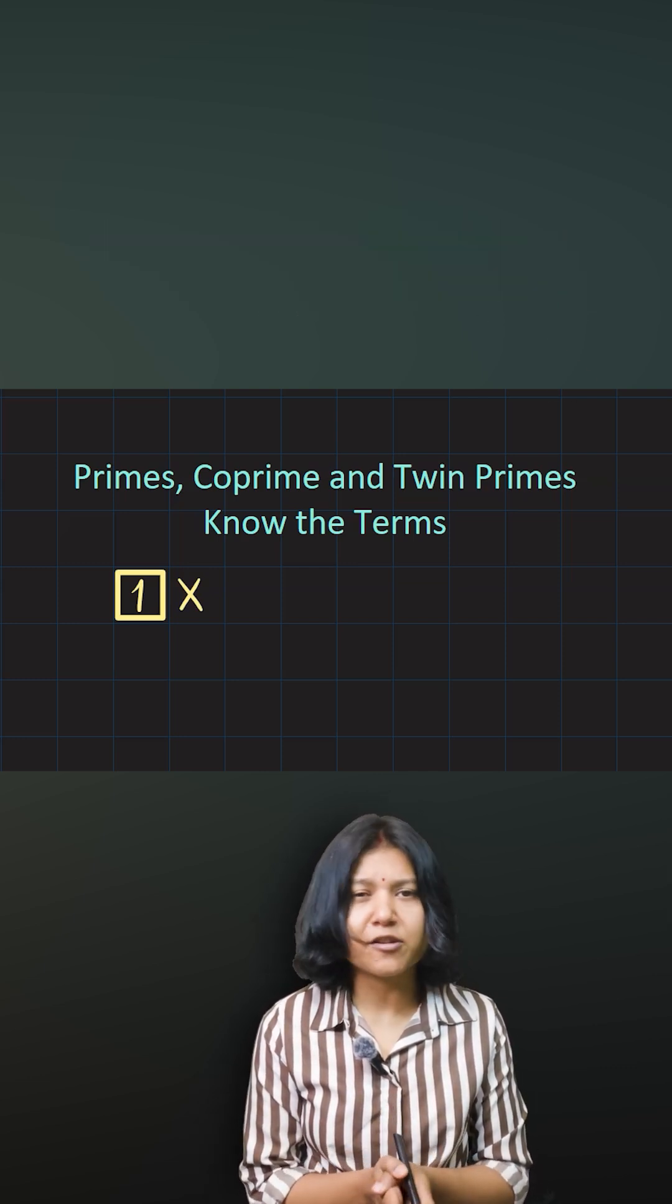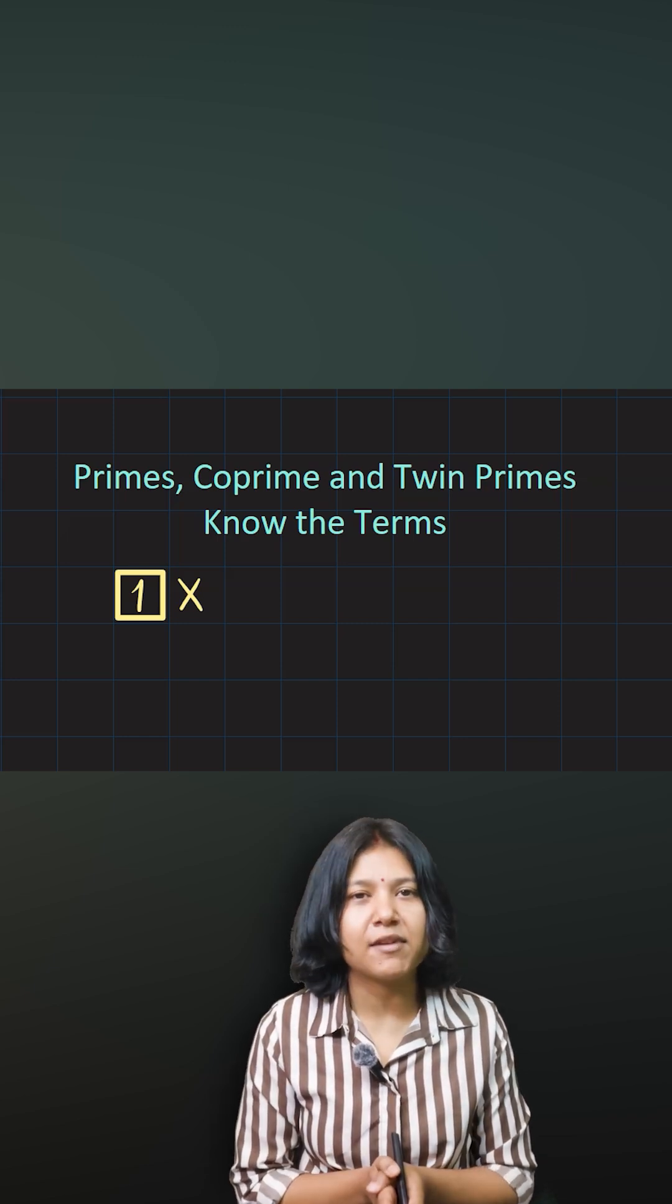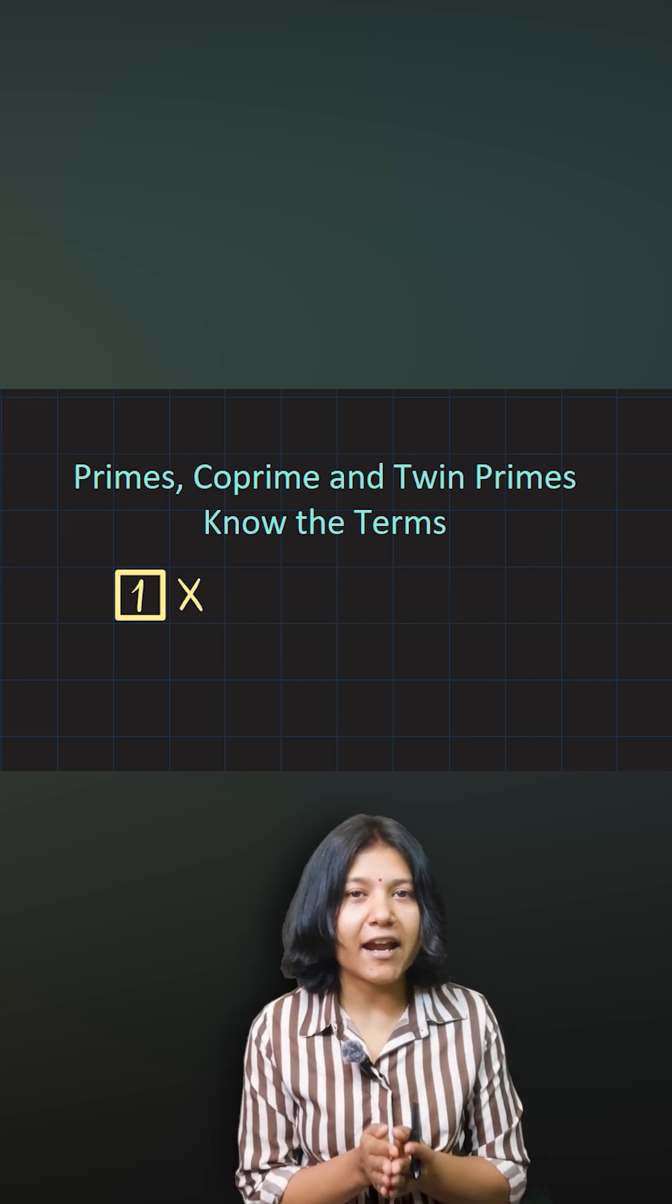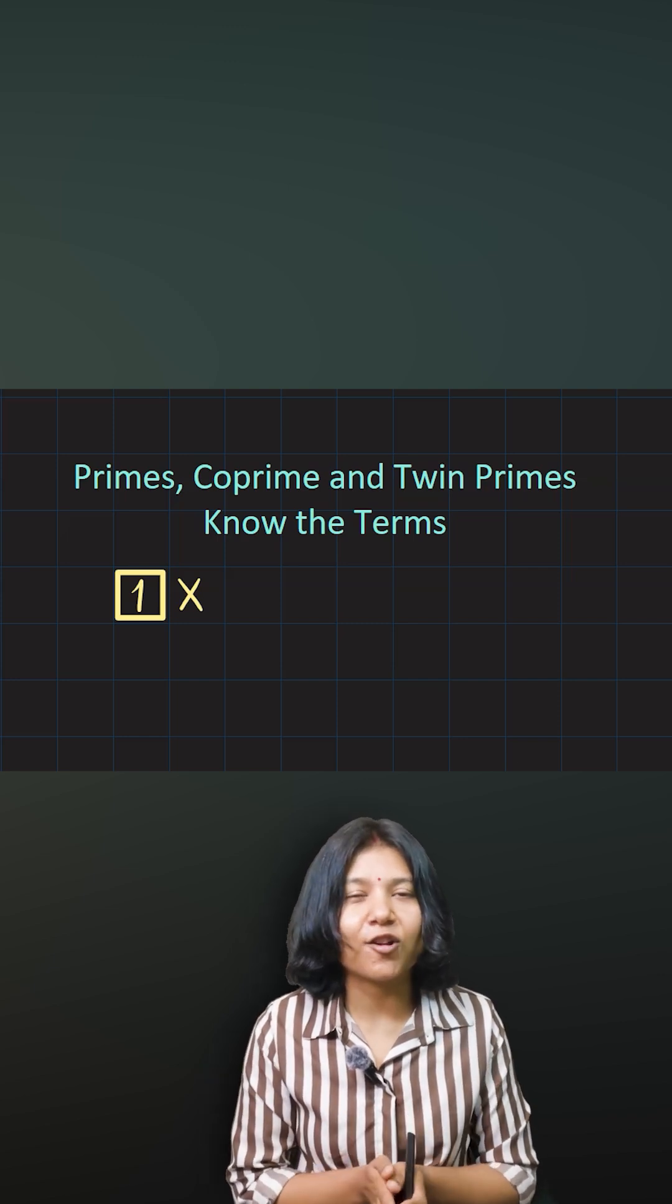When you look at these prime numbers, they are so special. Why do you think they are special? Because every number that's a non-prime number, that is a composite number, can be represented as a product of primes.